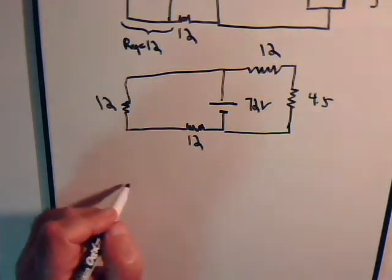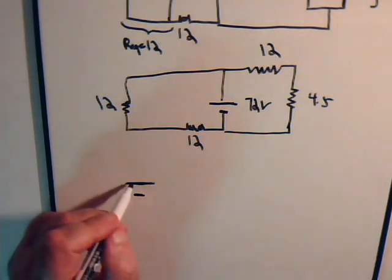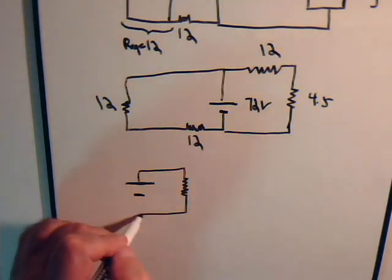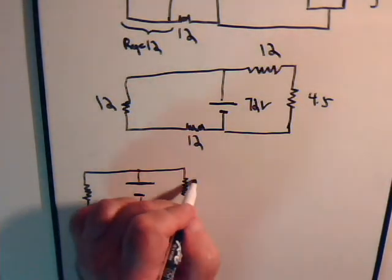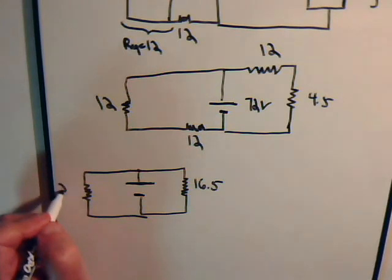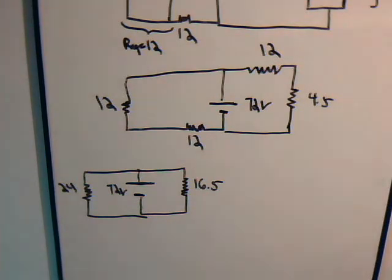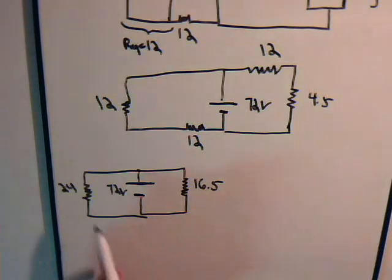Here's the battery. We have a 16.5 ohm resistor and a 24 ohm resistor, at 72 volts. We can realize these two are in parallel, so the voltage drop across each is the same — it has to be equal to the voltage of the source. That's the characteristic, of course, of a direct current parallel circuit.